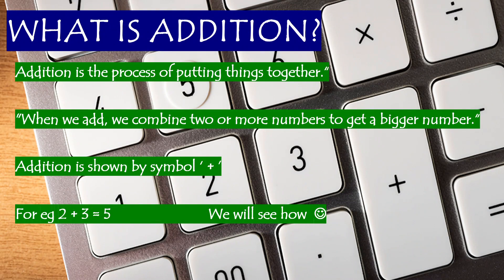What is Addition? Addition is the process of putting things together. When we add, we combine two or more numbers to get a bigger number. Addition is shown by the symbol plus. For example, 2 plus 3 is 5.